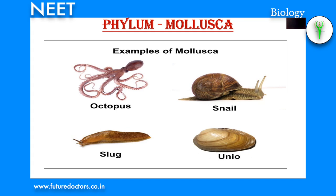In terrestrial forms, respiration occurs through lungs. In aquatic forms, respiration occurs through feather-like gills or ctenidia. Excretion: a pair of kidneys (organs of Bojanus or Keber's organs) are present. An open type of circulation is present and the coelom is called hemocoel. Nervous system: few pairs of ganglia — cerebral, visceral and pedal — with nerves are present. Molluscs reproduce sexually; sexes are separate and mostly oviparous. Fertilization is external and internal.